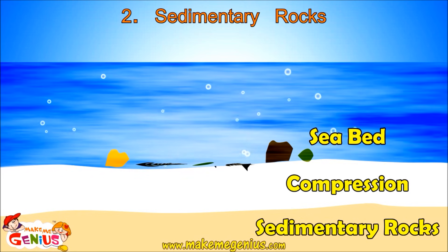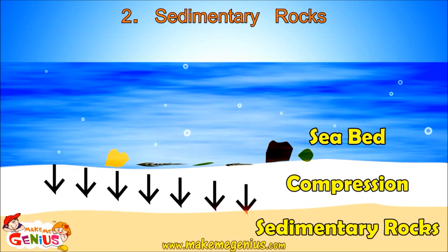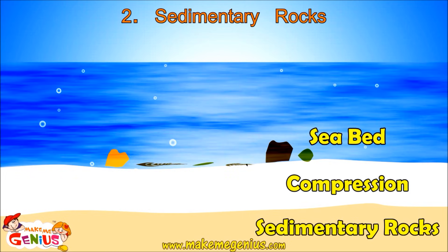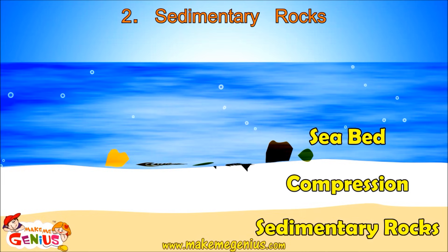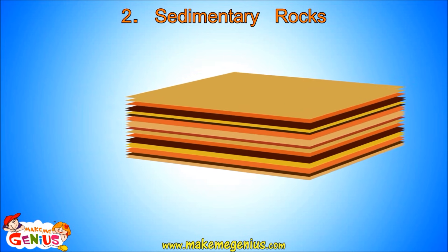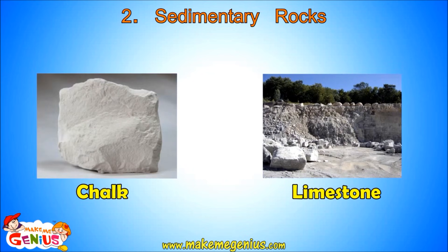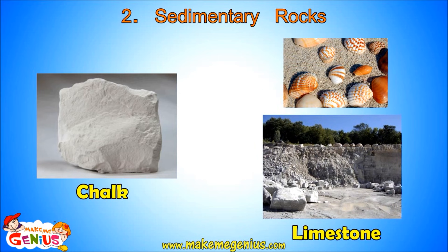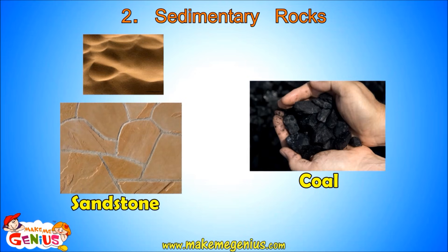Most of these particles ultimately reach the sea and get deposited on the seabed. As more and more of these particles settle on each other, they press each other and compression happens. The sediments at the bottom change into sedimentary rocks. This process takes thousands of years. Sedimentary rocks have very clearly different layers, known as beds or bedding planes. Limestone and chalk are two kinds of sedimentary rocks. The type of sedimentary rock formed depends upon the sediments that get compressed during formation.